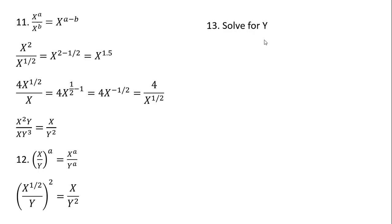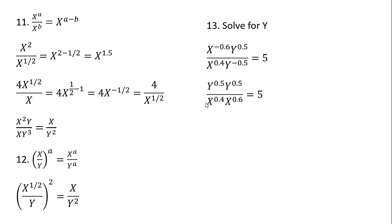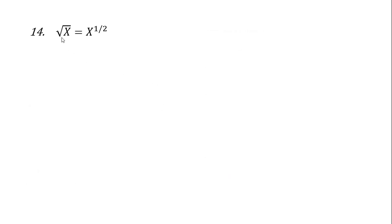Here we're going to solve for y — not so much a rule, but just simplifying using the rules of exponents. Move x to the minus 0.6 down into the denominator and y to the minus 0.5 up into the numerator. After making those moves and adding up the exponents, then multiply everything through by x — y equals 5x. And rule 14: the square root of x is just x raised to the 1 half power.